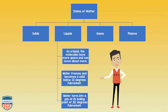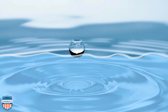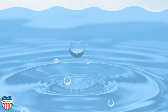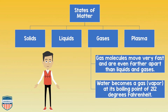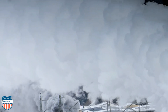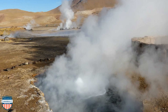Next, let's talk about liquids. As a liquid, the molecules have more space and can move about more. Water freezes and becomes a solid below 32 degrees Fahrenheit. Water turns into a gas at its boiling point of 212 degrees Fahrenheit. Next, let's discuss gases. Gas molecules move very fast and are even farther apart than liquids and solids. Water becomes a gas, or a vapor, at its boiling point of 212 degrees Fahrenheit.